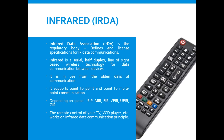Depending on the speed of data transmission, infrared is classified into many types: SIR (Serial Infrared), MIR (Medium Infrared), FIR (Fast Infrared), VFIR (Very Fast Infrared), UFIR (Ultra Fast Infrared), and GIR (Giga Infrared).